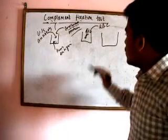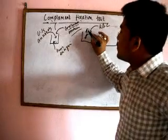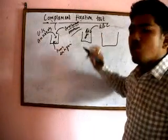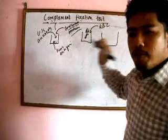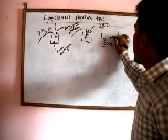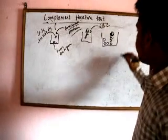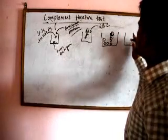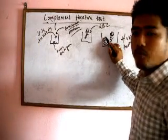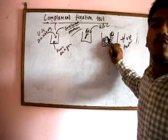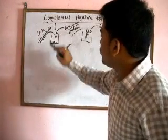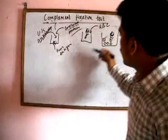Since the complement system is responsible for membrane attack, if there is free complement it would attack the RBCs. However, because all complement is already fixed to the antigen-antibody complex, there is no free complement. The RBCs are not lysed, so no red color is produced. Measured colorimetrically, no color means this is a positive result — the unknown antibody has affinity for the known antigen, and we can identify the disease.